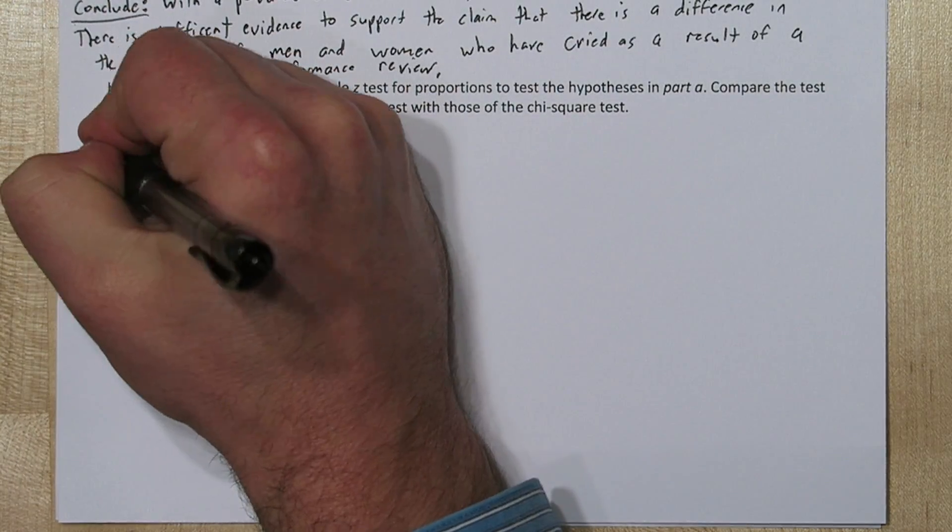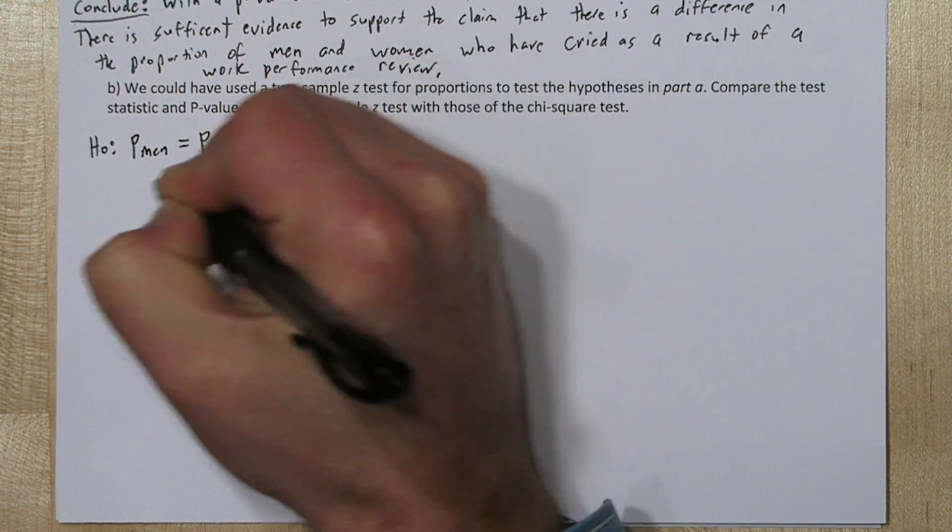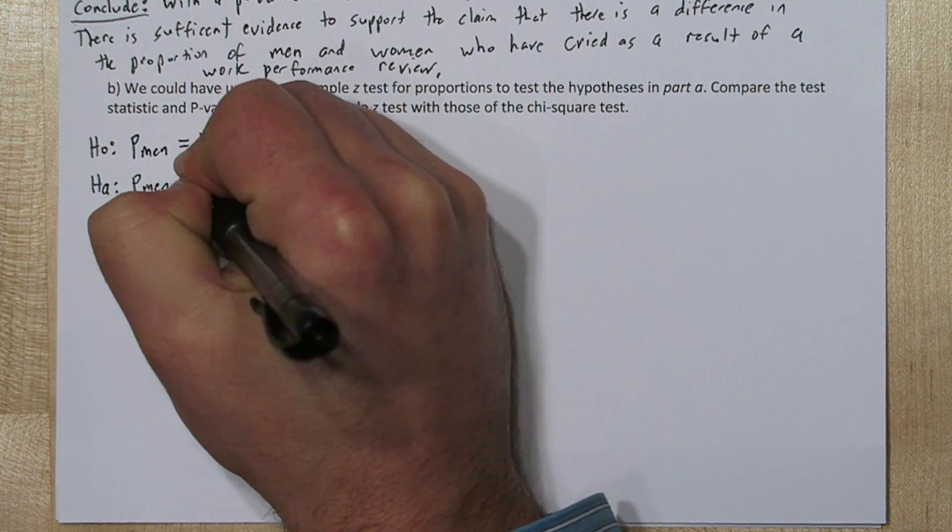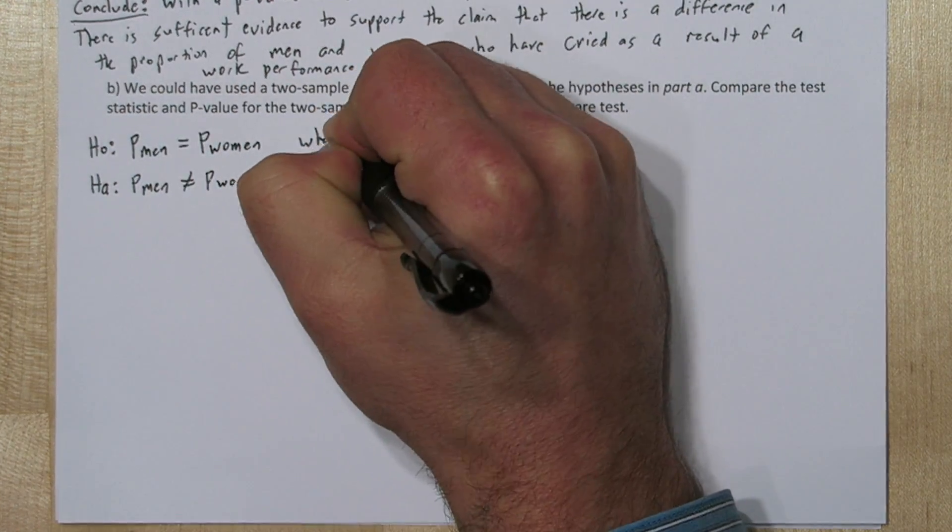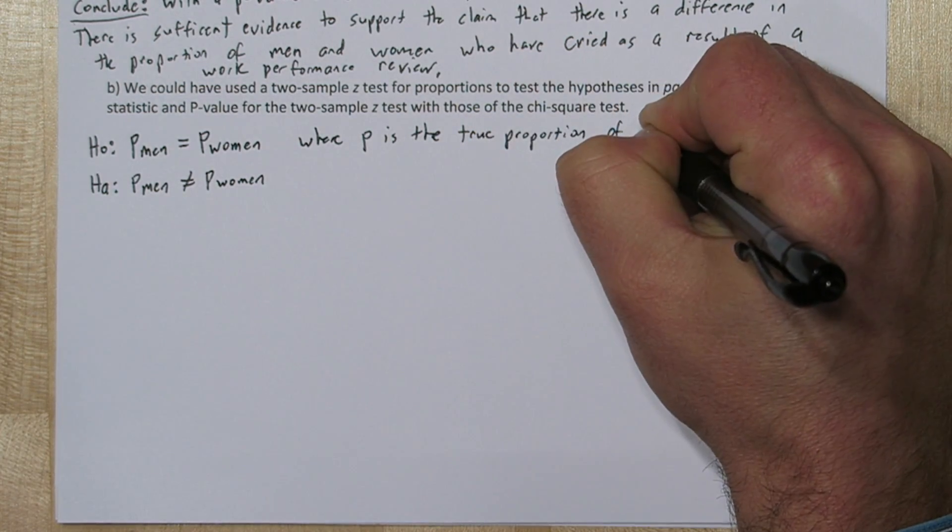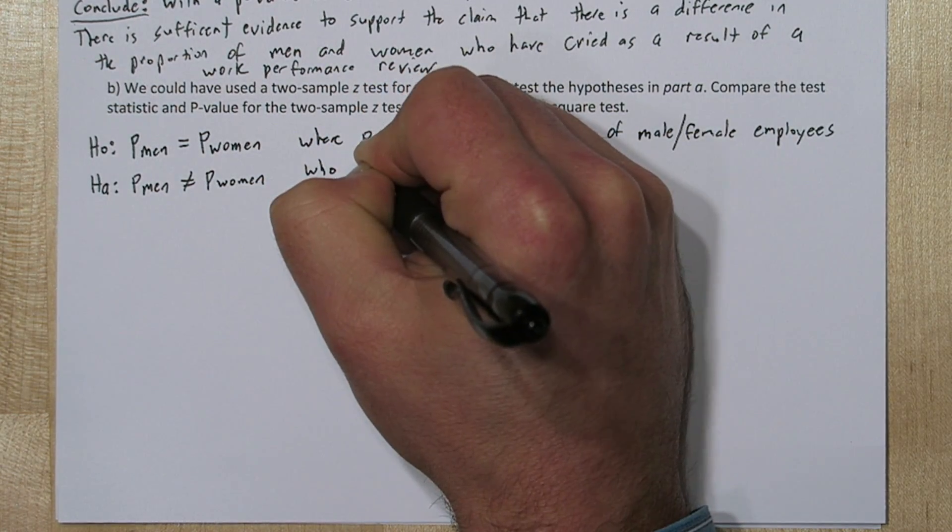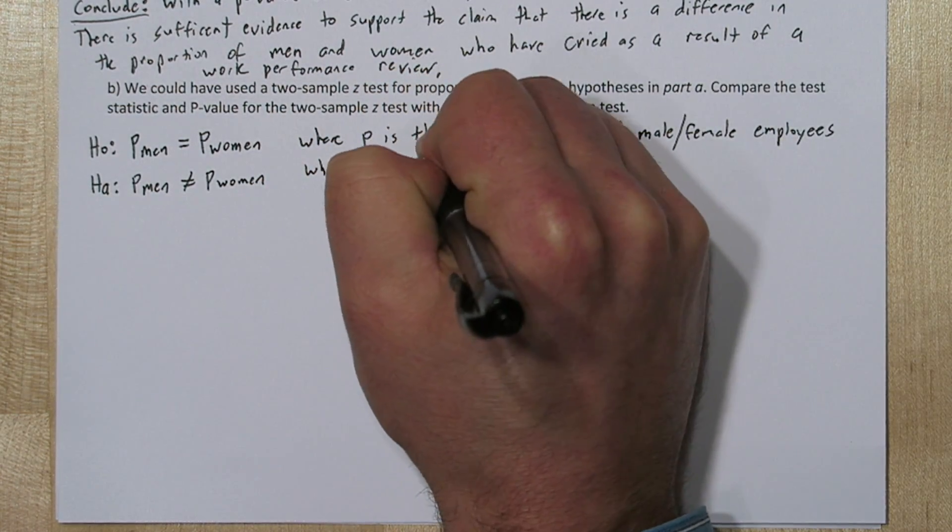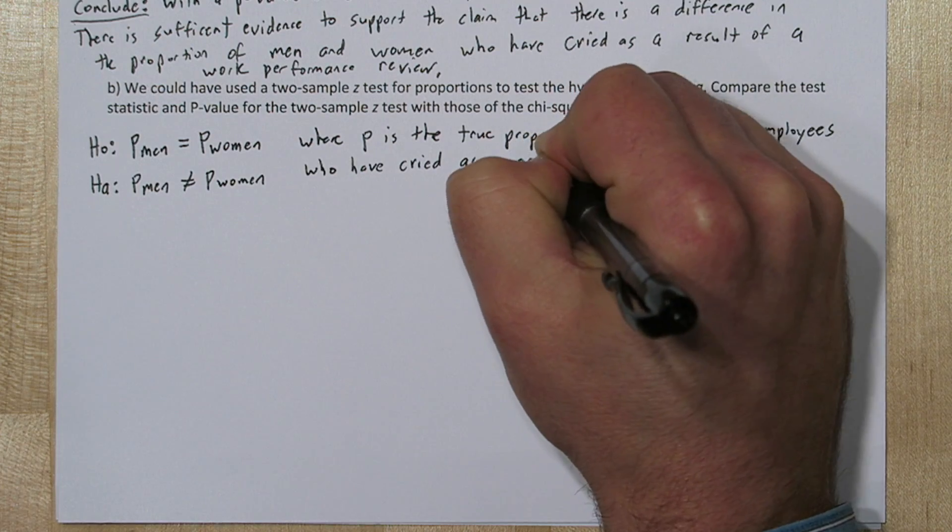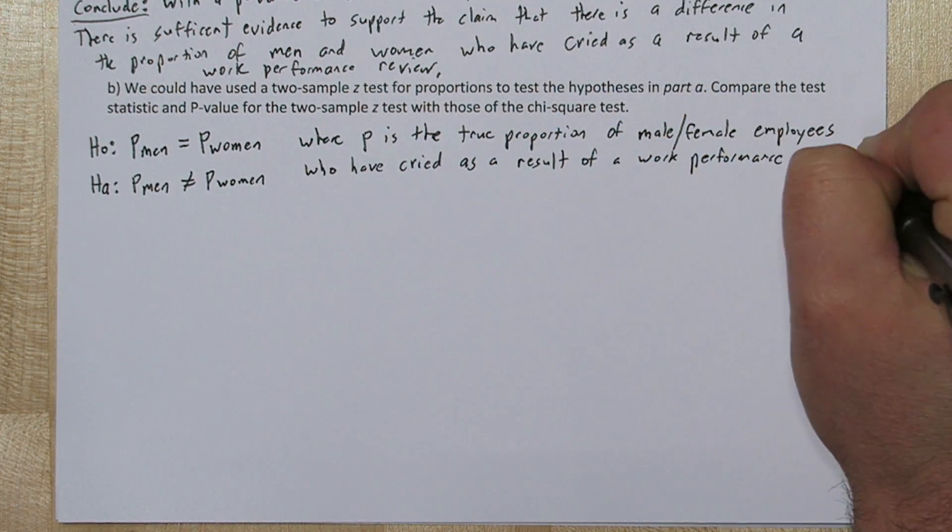Now for Part B we're going to perform another significance test, but this time a 2 sample z test. Let's start by restating the hypotheses, but in a different form. So our null hypothesis is the proportion of men equals the proportion of women. And our alternative is the proportion of men is not equal to the proportion of women. Where the proportion of interest is the proportion of males or females who have cried as a result of a work performance review.